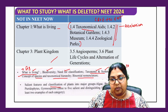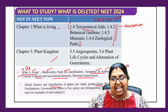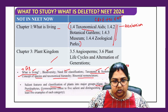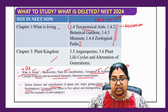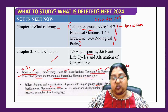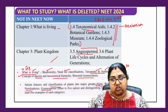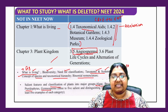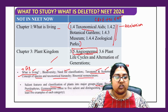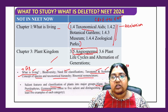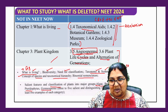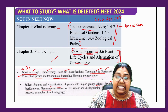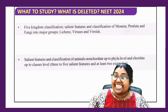In Chapter 2, the classification of plants — algae, bryophytes, pteridophytes, gymnosperms — is all there. What is deleted is angiosperms: just as in CBSE, angiosperms is totally deleted from NEET as well. Also, the life cycle and alternation of generations, which used to be a very important topic, is also deleted from the NEET syllabus.